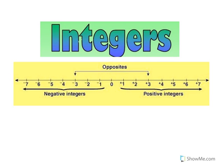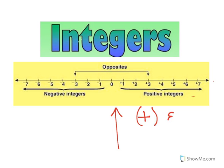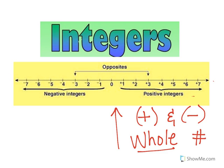Integers are basically everything you see here on this number line. Let's discuss what we see on this number line. I have positive numbers and I have negative numbers. Positive numbers, you're very familiar with those — those are any numbers larger than zero. Negative numbers are smaller than zero. Integers are positive and negative whole numbers. Notice you do not see decimals and you do not see fractions.